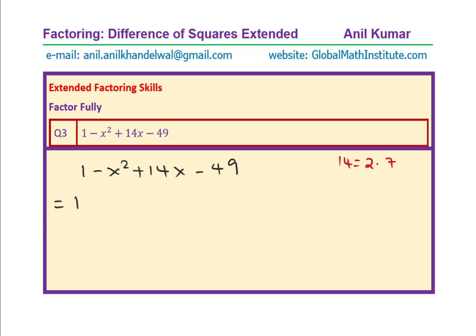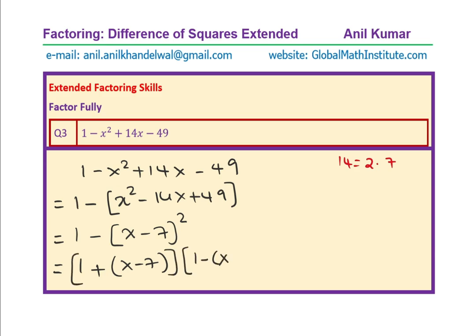So, we could rewrite this as 1 - (x² - 14x + 49). Now, 49 is 7². So, I could write this as 1 - (x-7)². Can I write like this? Yes, I can. And now, I will apply difference of squares. So, that is interesting. Can you factor this now using difference of squares? I think you can. You can write this as 1² - (x-7)². Now, we have difference of squares and I could write this as (1+(x-7))(1-(x-7)).